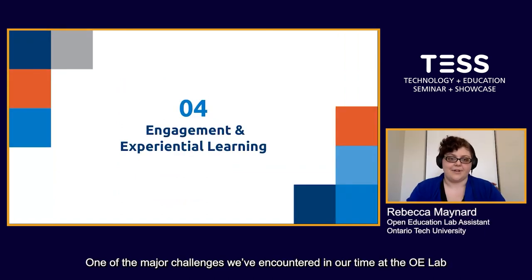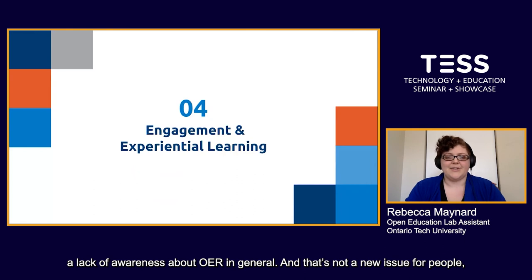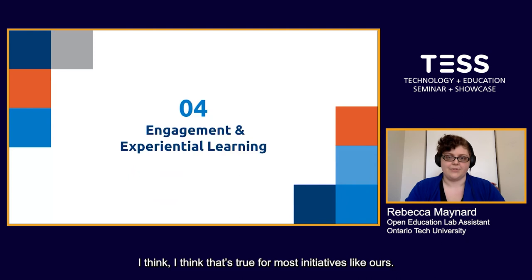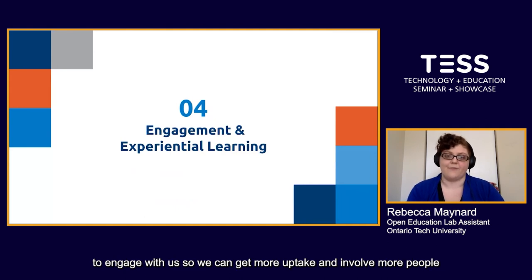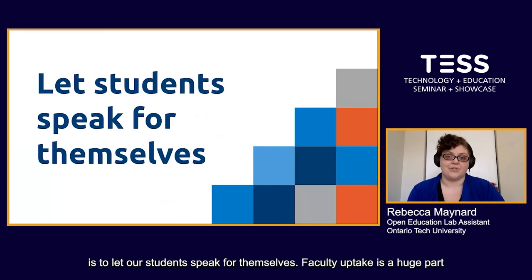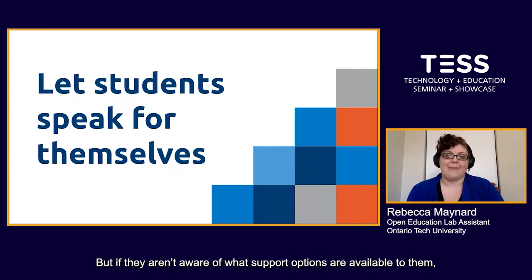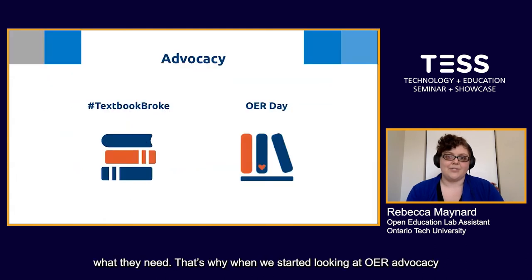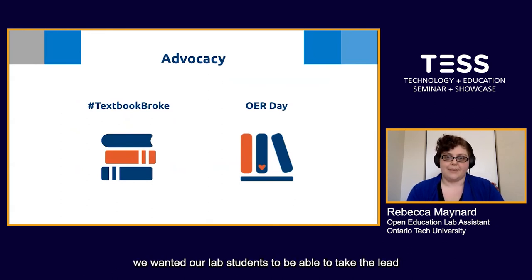One of the major challenges we've encountered is a lack of awareness about what we do and frankly about OER in general — that's not a new issue and is true for most initiatives like ours. So it's been a persistent question: how can we encourage our institution to engage with us so we can get more uptake and involve more people in the open movement? One useful strategy we found is to let our students speak for themselves. Faculty uptake is a huge part of building a sustainable OER movement, but the best possible ambassadors for OER are the people who are going to actually use them. Students know what educational supports they need better than anyone, but if they aren't aware of what support options are available, we're not giving them the tools to fully express what they need. That's why when we started looking at OER advocacy on campus — both student-focused and faculty-focused — we wanted our lab students to take the lead and speak for themselves.